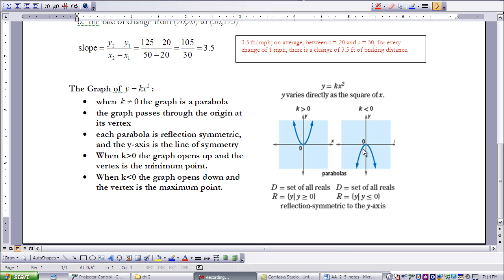Also, each parabola is reflection symmetric, so if you notice here, the y-axis is its line of symmetry. When k is greater than 0, the graph opens upward, and when it's less than 0, it opens downward.